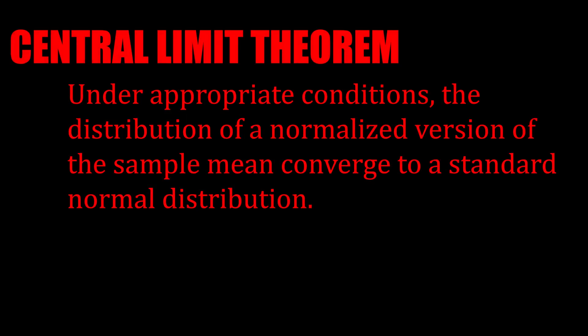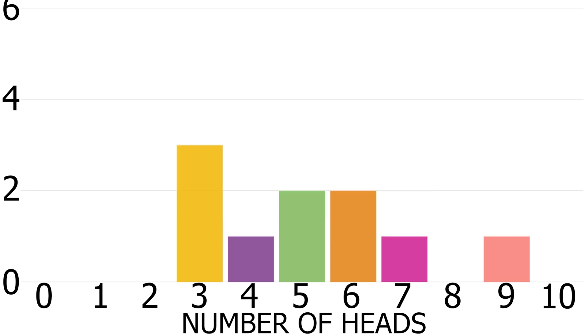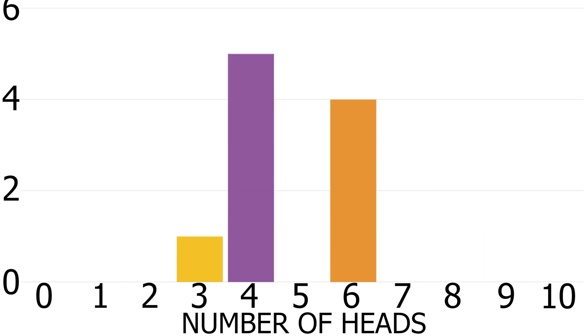Something called the Central Limit Theorem says that my results will look like this every single time. But my results don't look like that at all. So let's try it again and again and again — and none of them really look like that either.